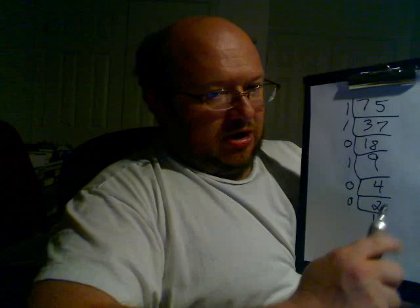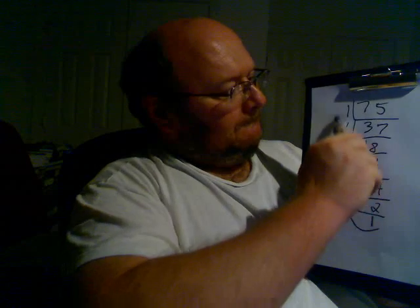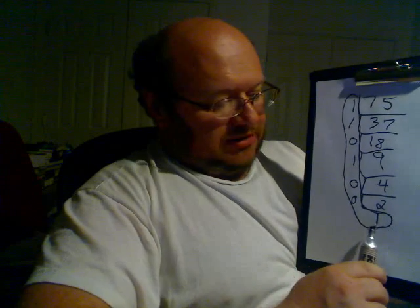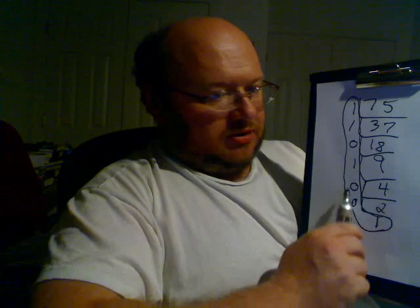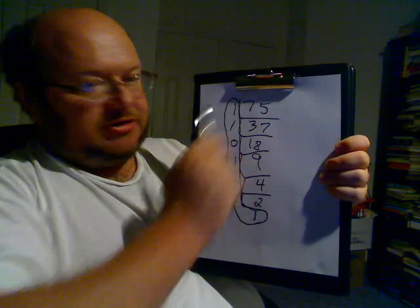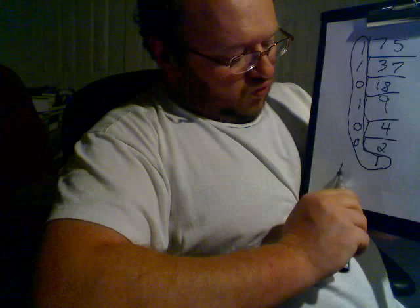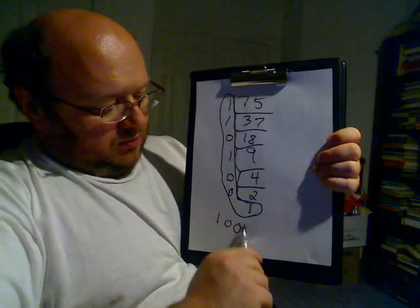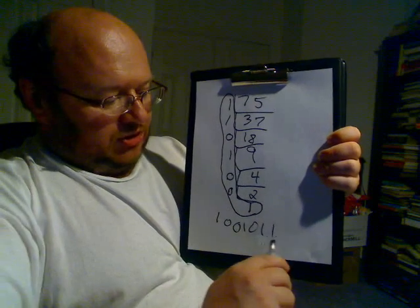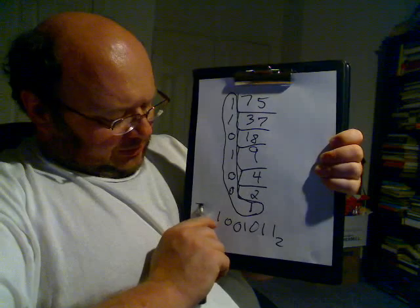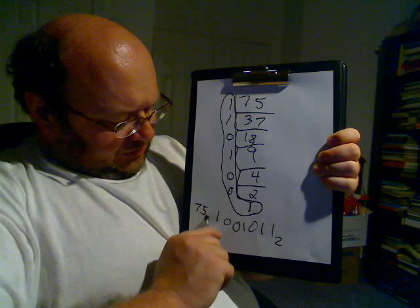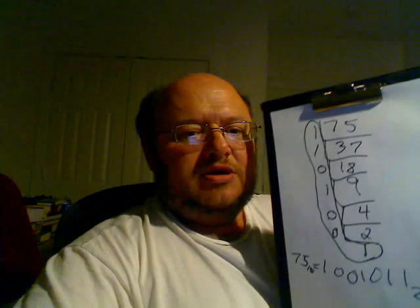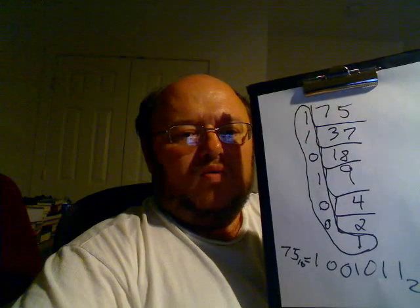What you do is you take all these numbers and you read them off backwards. So take this number first, then this number, then this number, then this, this, this. And then you read the number off that way. So it's 1, 0, 0, 1, 0, 1, 1. What we figured out here is that 75 base 10 is equal to 1001011 base 2.